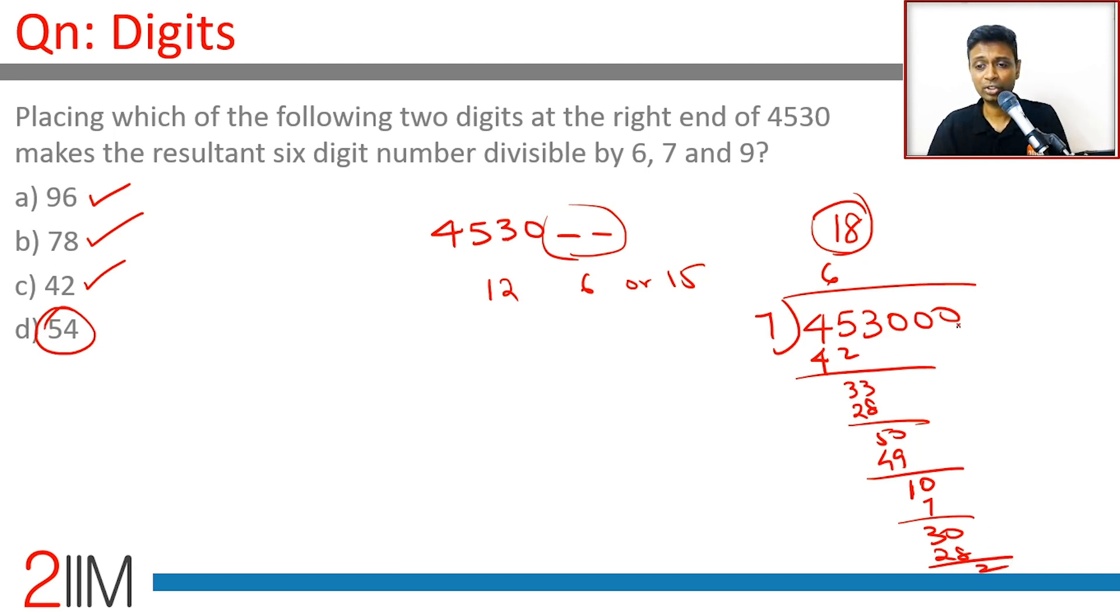So 453000 gives a remainder 2. Now remaining, this digit when it is stacked on, so 453000 plus something should give a multiple of 7. This gives a remainder of 2, so this should give a remainder of 5. So 2 plus 5, 7 will correspond to 0.